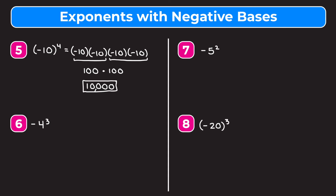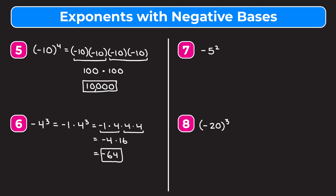Example 6: negative and then 4 to the third. We can write this as negative 1 times 4 to the third, where 4 to the third means multiply 4 by itself three times. Multiplying negative 1 times 4 gives negative 4, and 4 times 4 is 16. Negative 4 times positive 16 gives negative 64. Alternatively, keeping the negative on the outside and multiplying 4 by itself three times: 4 times 4 is 16, and negative 16 times 4 is also negative 64.